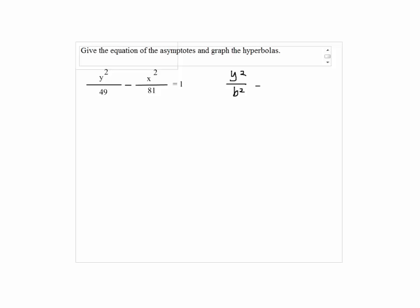Since we have y squared over b squared minus x squared over a squared equals 1, it's going to be a vertical hyperbola.